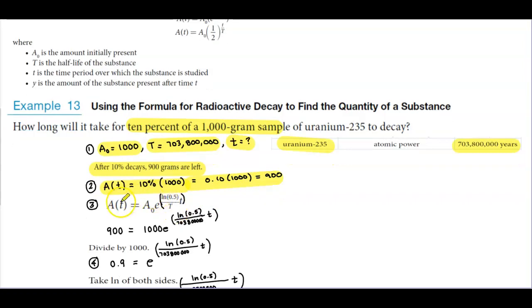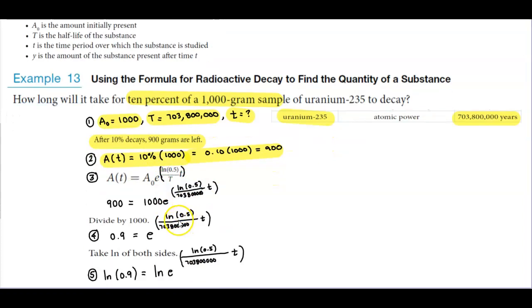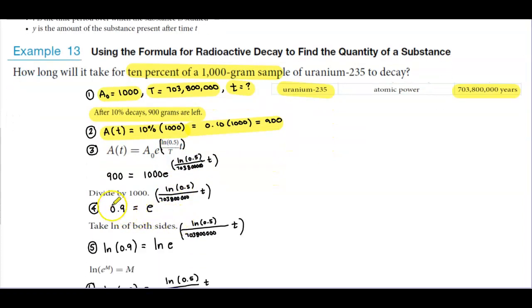And so now using that formula, we can now fill everything in to solve for the variable t. Because our goal is, can we find out what is the information that's given? And most formulas are always going to give you all the variables and solve for one.